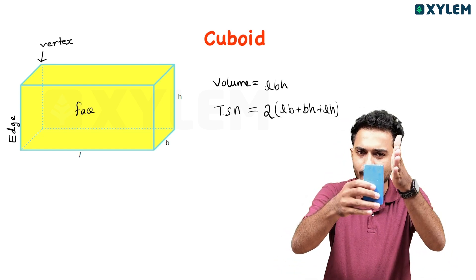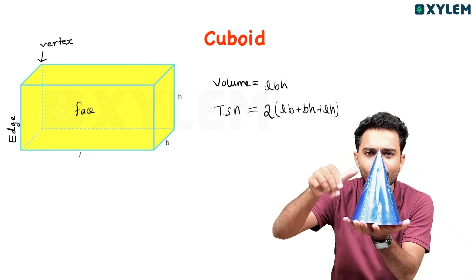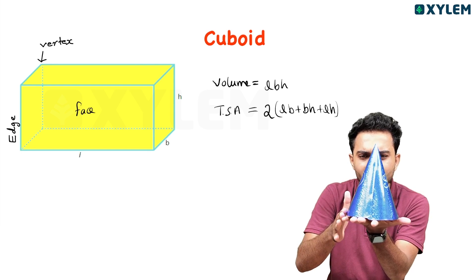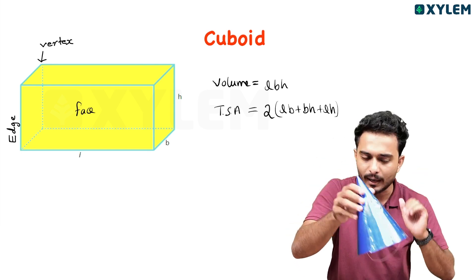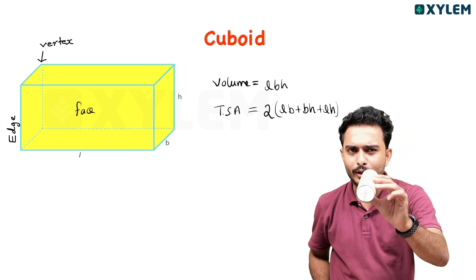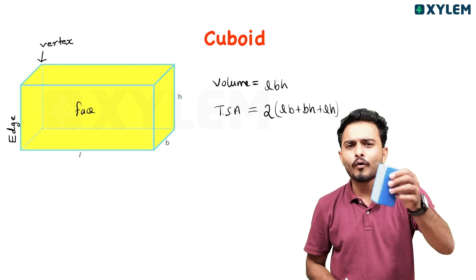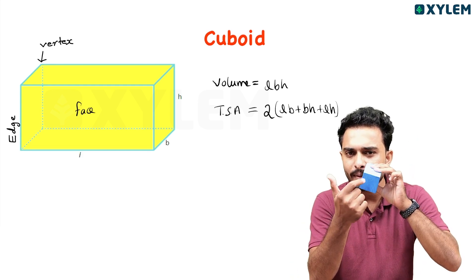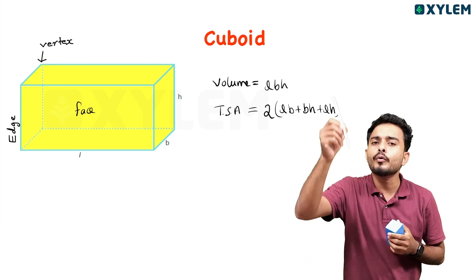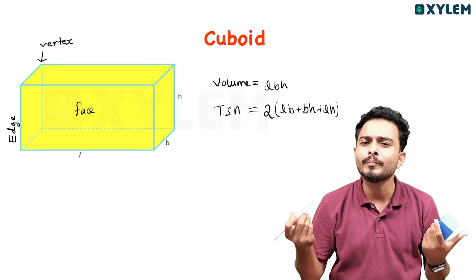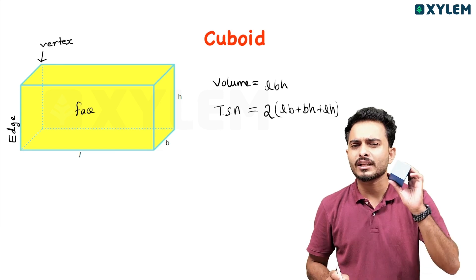The volume is the base area into height. This is the base area into height. This shape is the cylinder. It is the height. It means size. The base area — this is the total surface area.